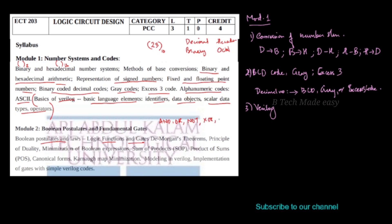There are also XOR, NOR, and XNOR gates — different types of gates in this second module. De Morgan's Theorem is also covered here and is very important.